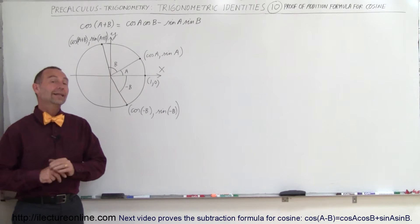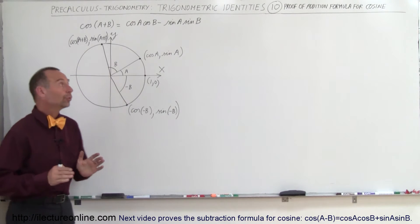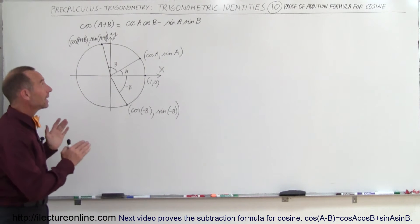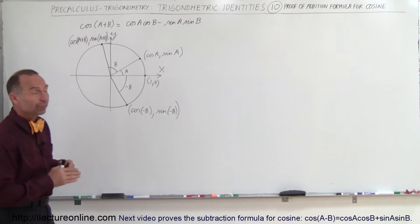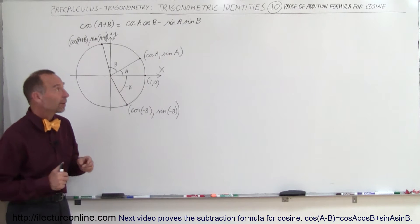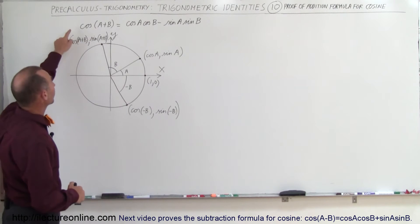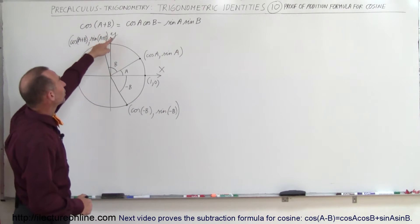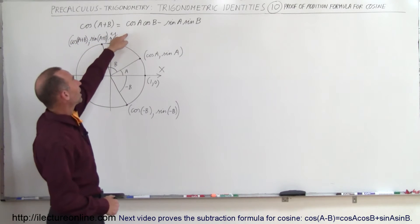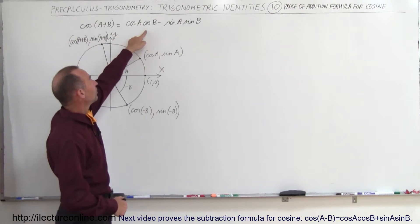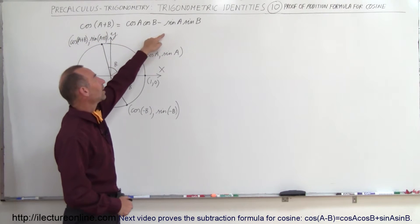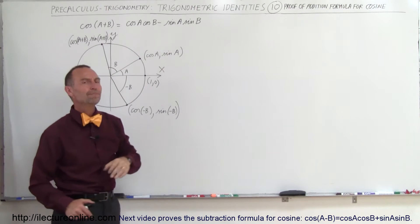Welcome to our lecture online. We're going to prove the addition formula for cosine. Remember that the cosine of A plus B is equal to the cosine of A times the cosine of B, minus the sine of A times the sine of B.